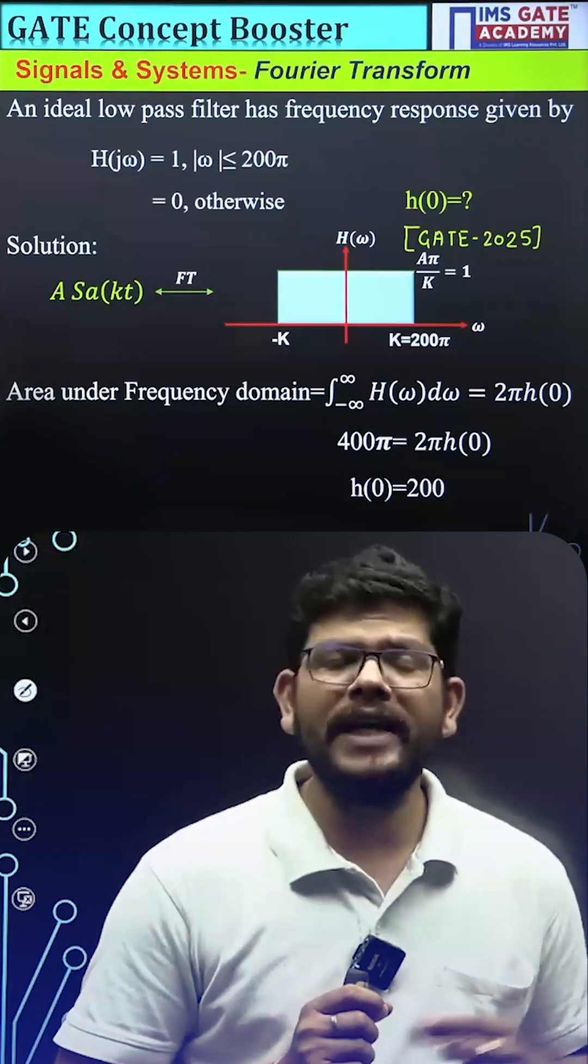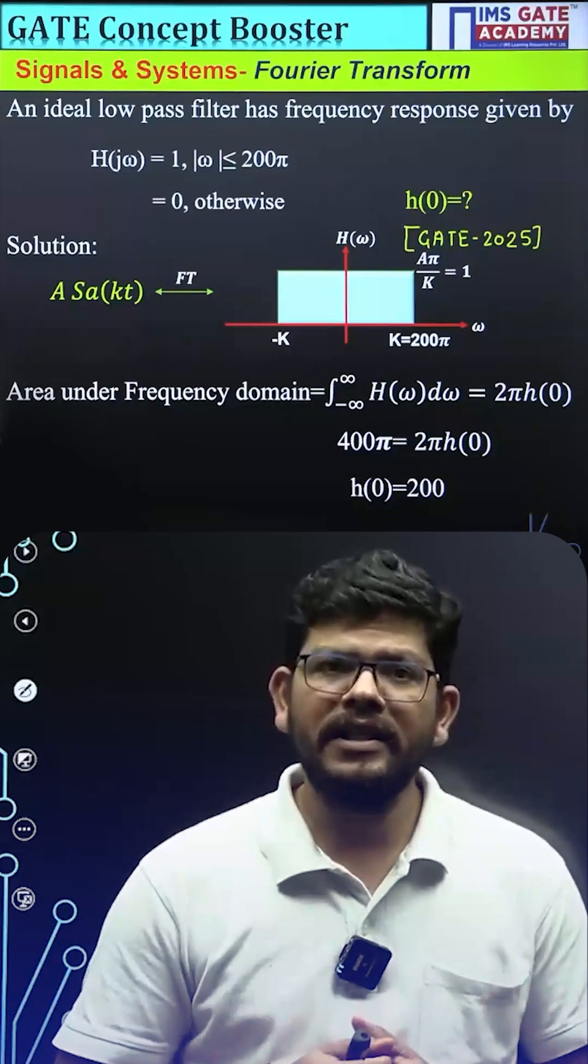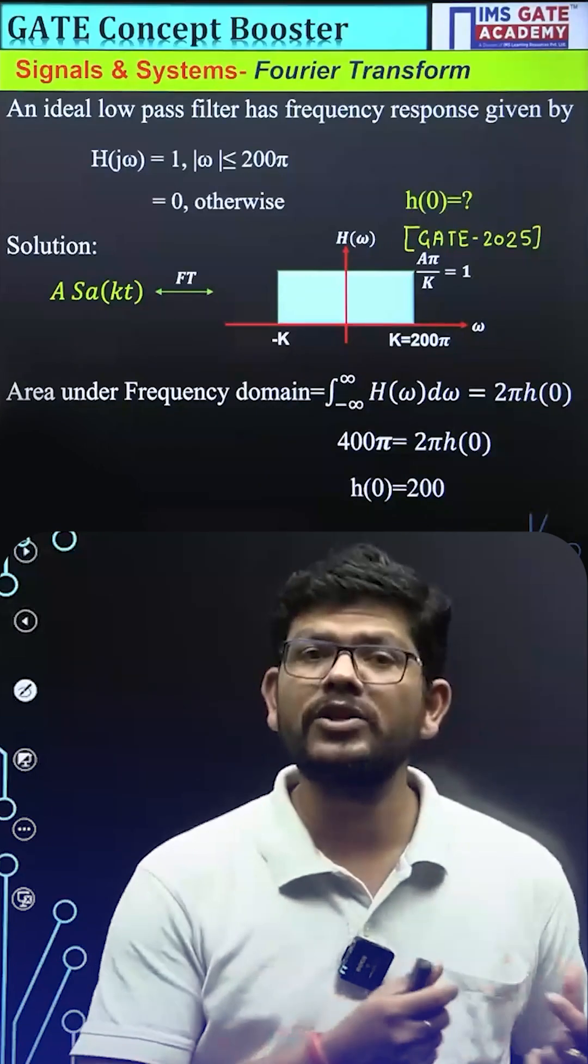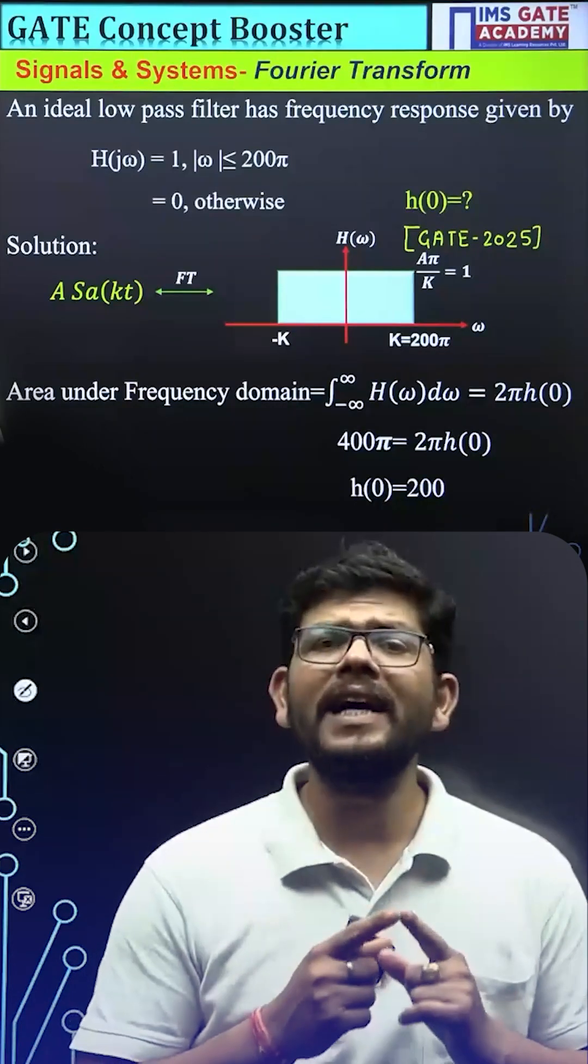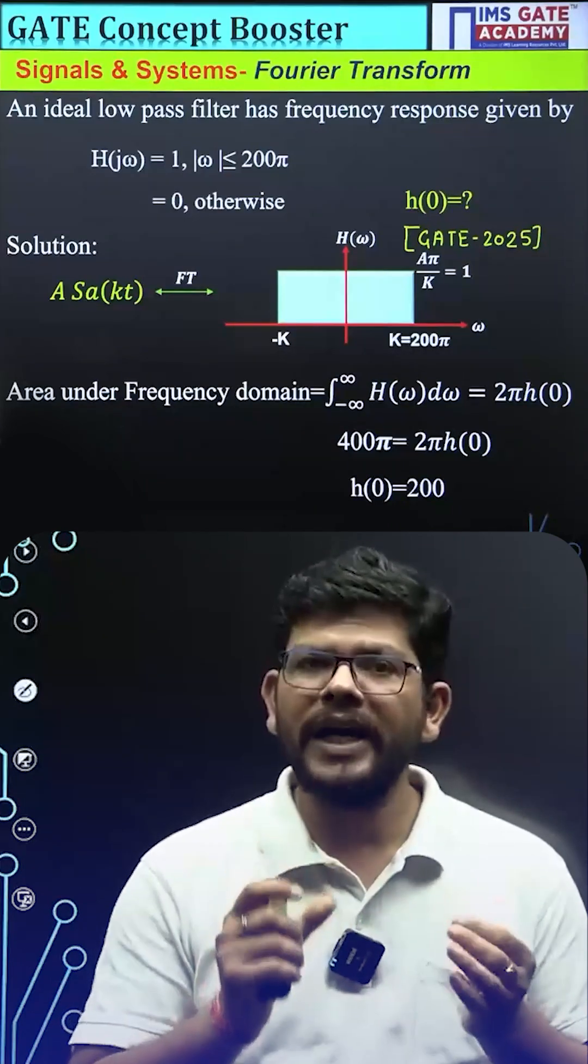So what is the area of this rectangular waveform? We have the transform. So we can calculate the area under the transform or area under frequency domain which is equals to the area of this waveform. So it is like height into width. Now the width is 400π and the height is 1. So area will be 400π.